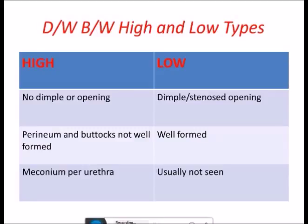Differences between high and low types: In the high type, there is no dimpling or opening seen at the skin level. In the low type, there is a dimple or skin opening. In high types, the perineum and buttocks are not well formed; in low types they are well formed. In high types, the patient may pass meconium per urethra, but in low types usually not, because there is generally no communication in low types.